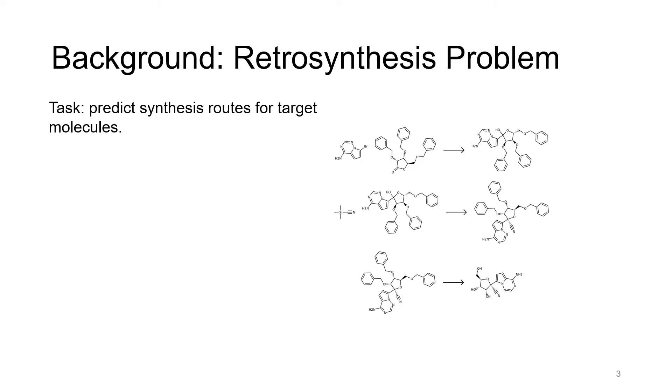Molecule retrosynthesis is a fundamental problem in chemistry, drug discovery, and material science. Given a target molecule, the task is to figure out a series of reactions that lead to the synthesis of the molecule from a set of building blocks. For example, the molecule in the green box at the bottom right corner is the target molecule we want to synthesize, and the molecules in the blue boxes are the building block molecules, which are already available at the beginning.